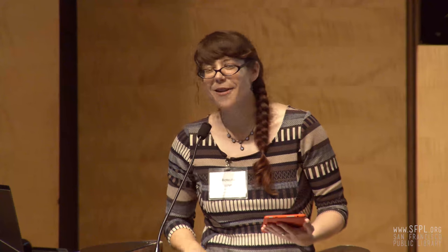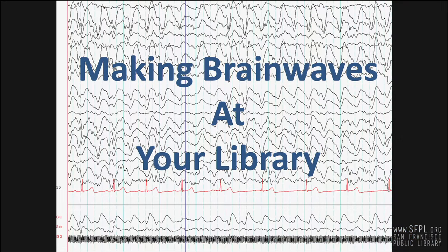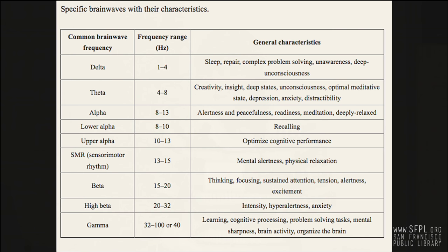Coming back to the libraries: today we've talked about brainwaves and different methods to help get brainwaves to a desired frequency range, and that different brainwave ranges are helpful for different tasks. This diagram shows different brainwave frequencies, their ranges, and general characteristics — a helpful chart to figure out how to use different brainwave entrainment ranges to focus on different programs.